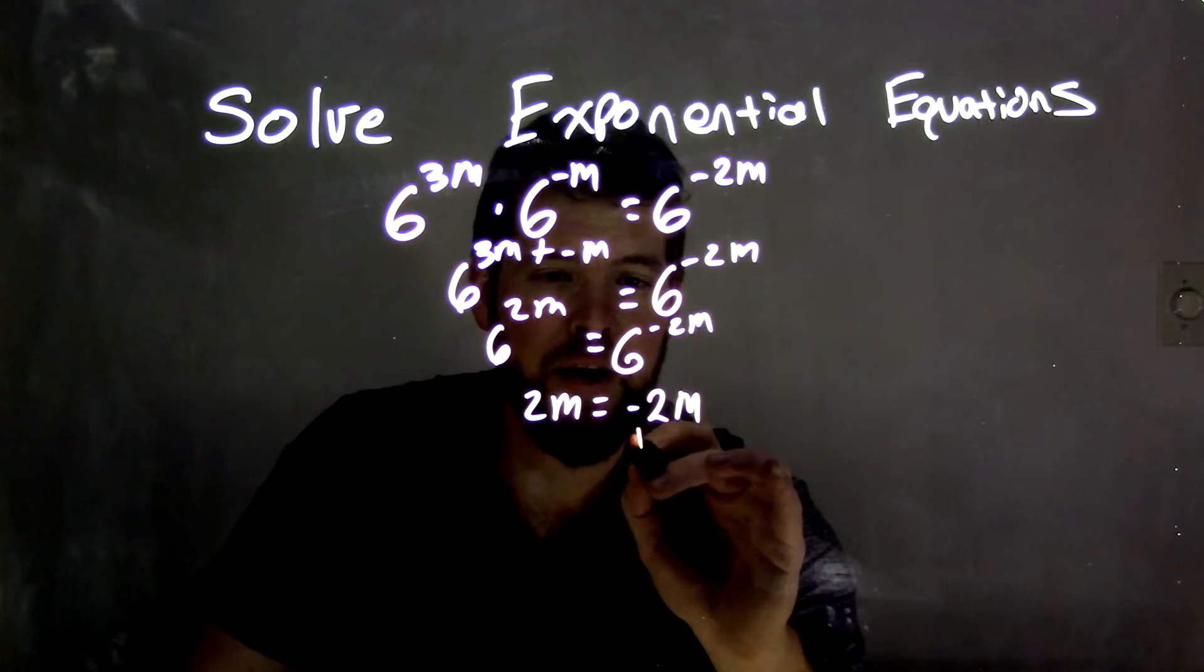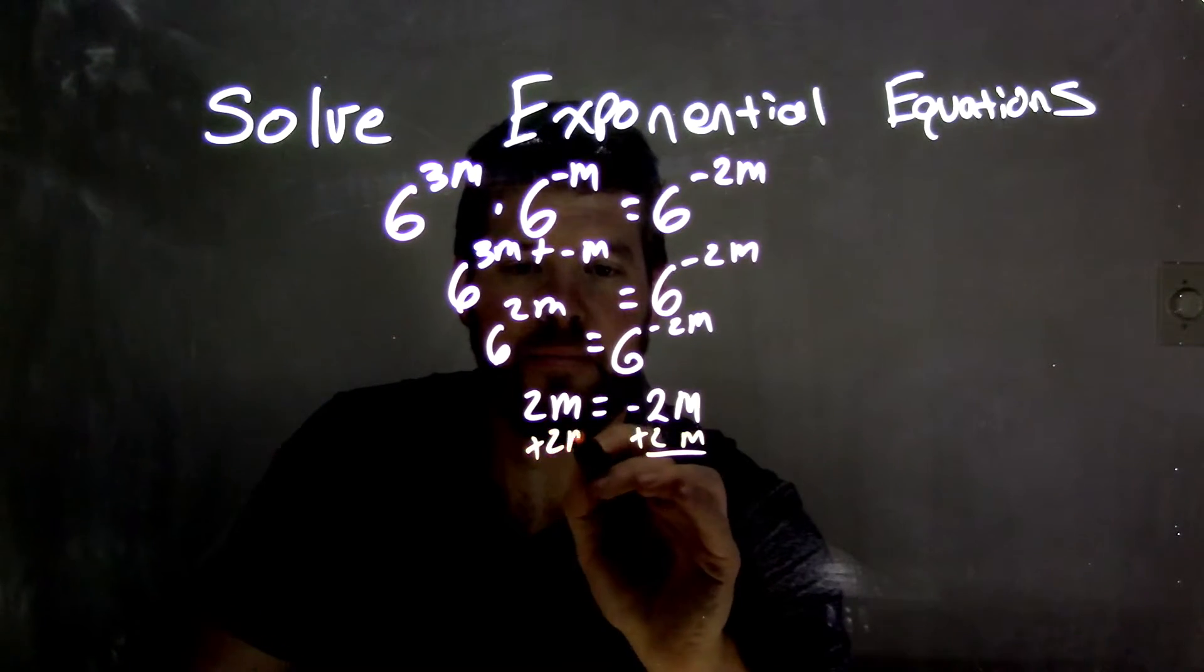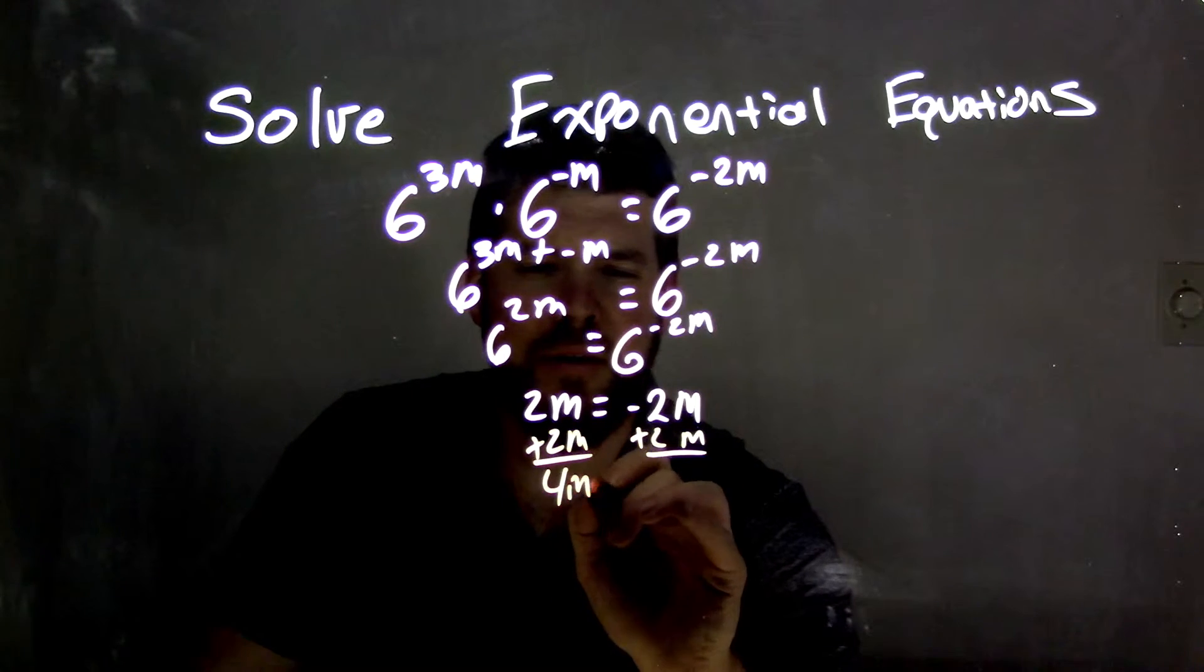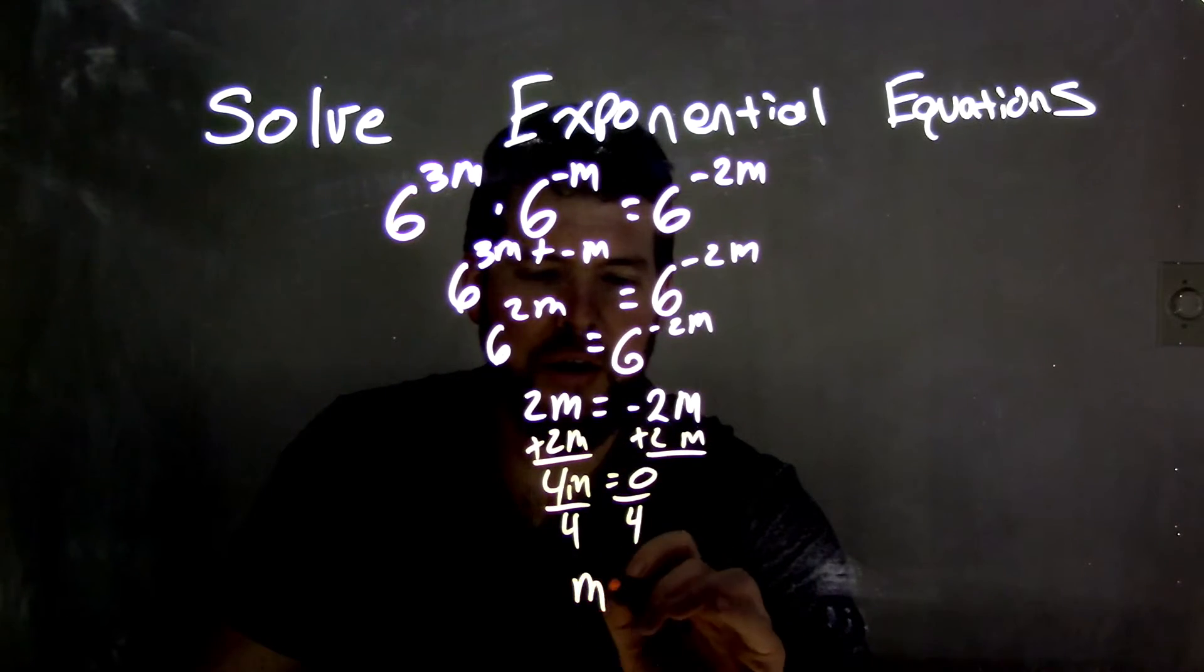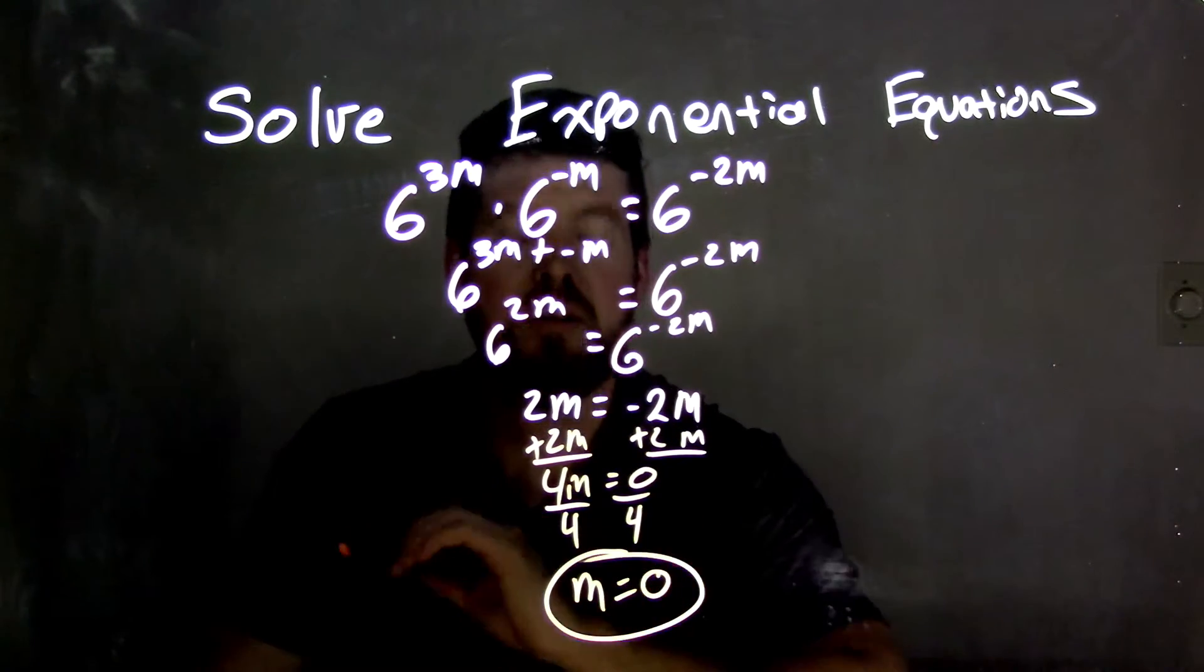But we can solve for it anyway. We added 2m to both sides, so we have 4m equals 0. We divide by 4, and 0 divided by 4 is just 0.